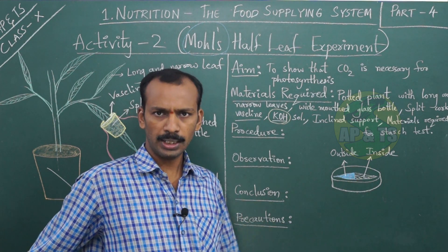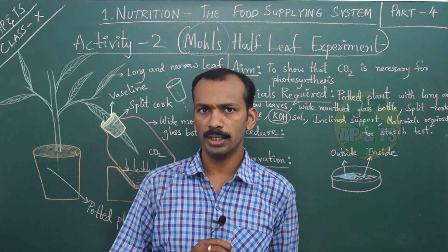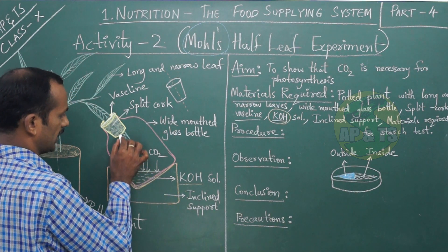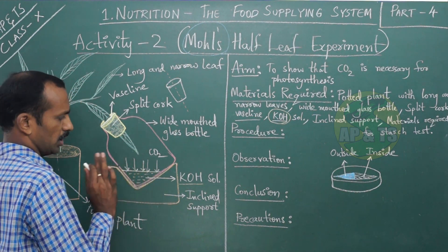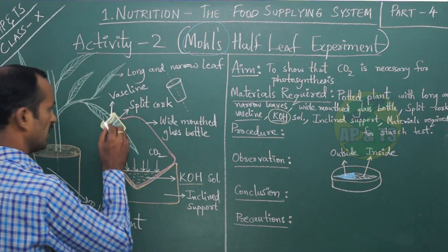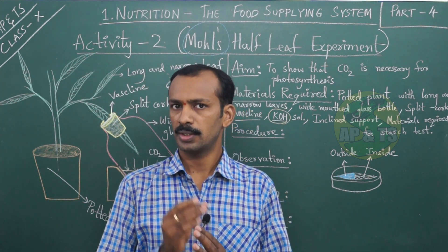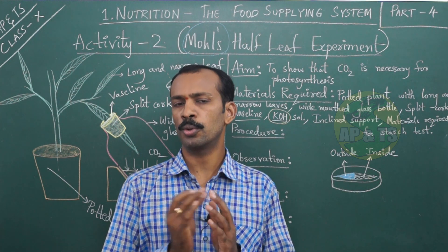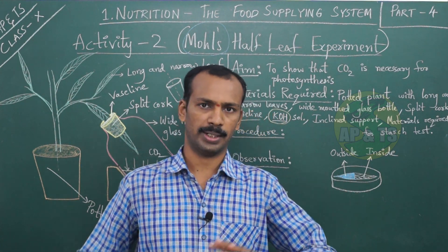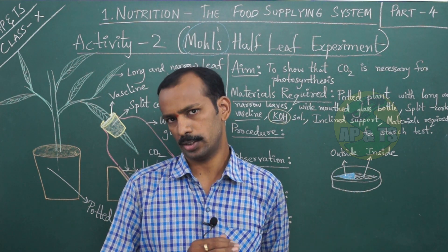There are two precautions in this activity. First, the KOH solution in the glass bottle should not touch the leaf - the leaf and KOH must not be in contact. Second, ensure that the vaseline between the two split corks is applied properly so that there is no movement of air from inside to outside or outside to inside the bottle. With this we have completed Mole's Half Leaf Experiment.